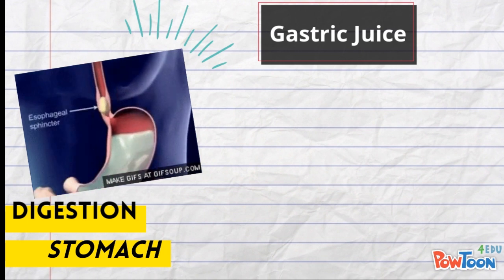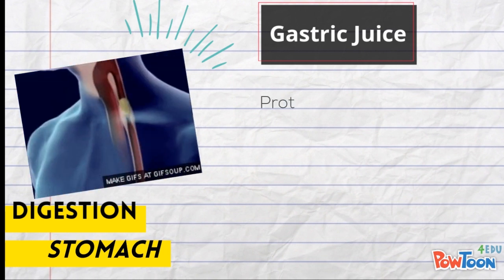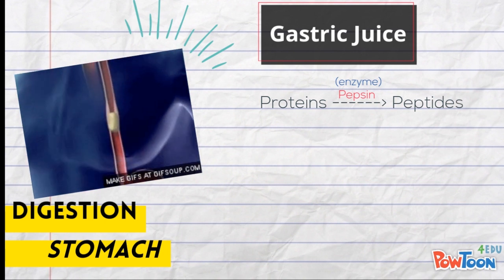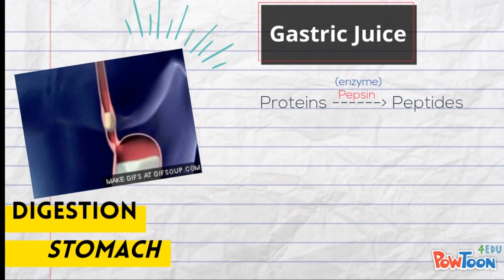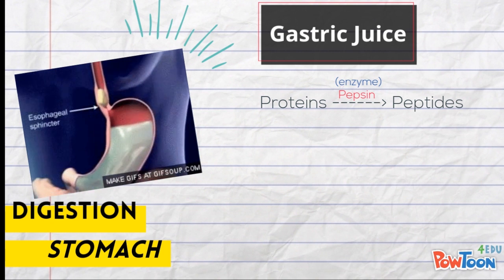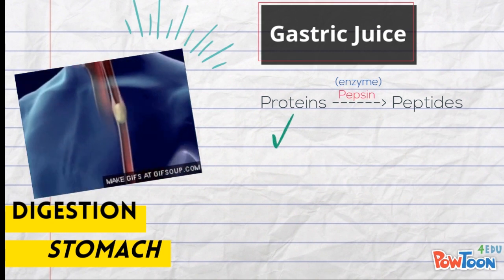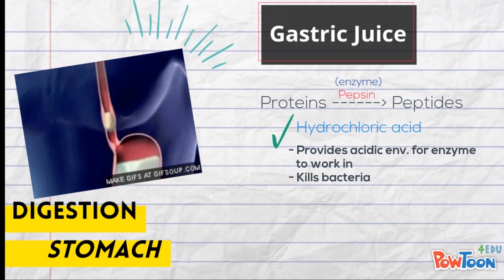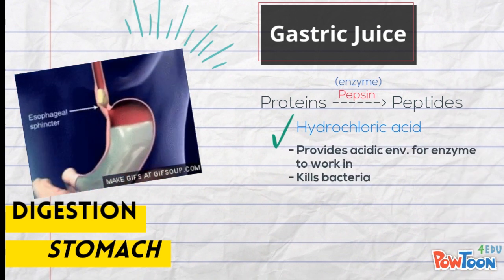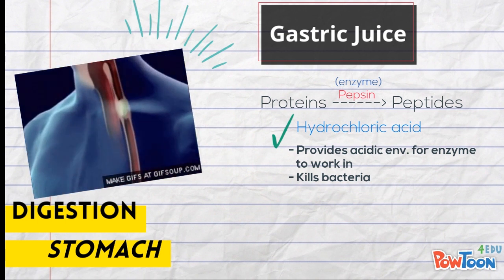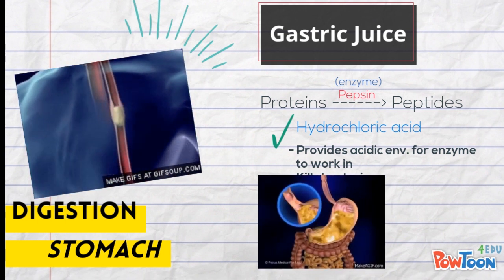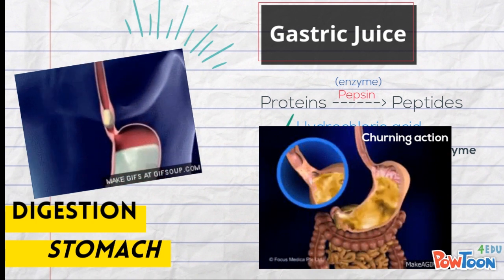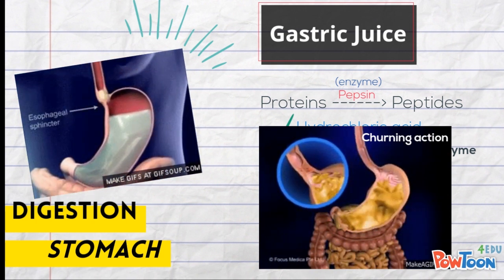In the stomach, there are glands that secrete gastric juice containing another kind of enzyme, pepsin, which digests proteins into peptides. The gastric juice also contains hydrochloric acid, which provides an acidic environment for the enzyme pepsin to work in. The acid also helps to kill bacteria present. The churning action of the stomach also acts as a kind of mechanical digestion by mixing the food with the digestive juice.